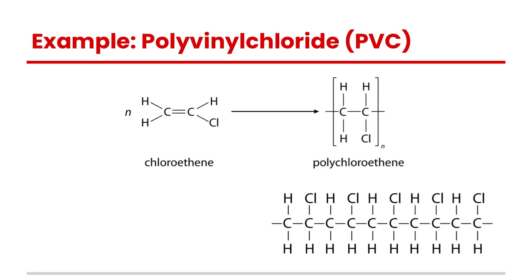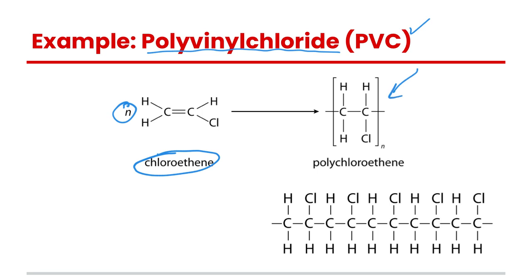Taking a look at an example, this is polyvinyl chloride, or PVC for short. This particular polymer is made up of chloroethene monomers, and if you take n number of these you can create polyvinyl chloride, which is its common name.